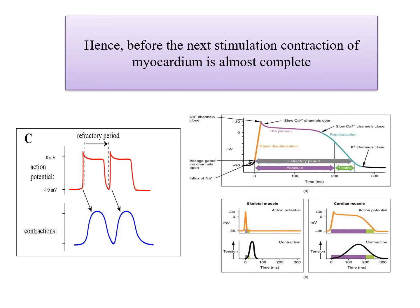Hence, before the next stimulation comes, the contraction of the myocardium is almost complete. So during this long refractory period, the excitation followed by the contraction process, and this contraction is almost complete when the next action potential arrives.